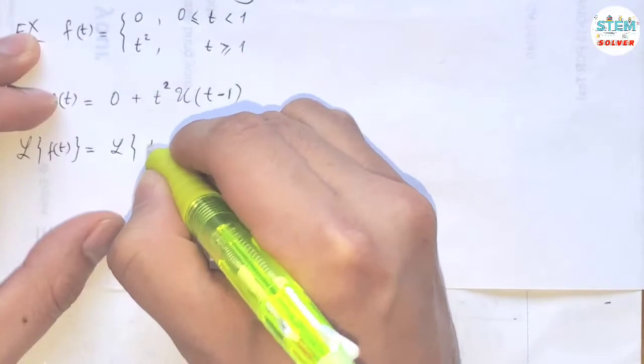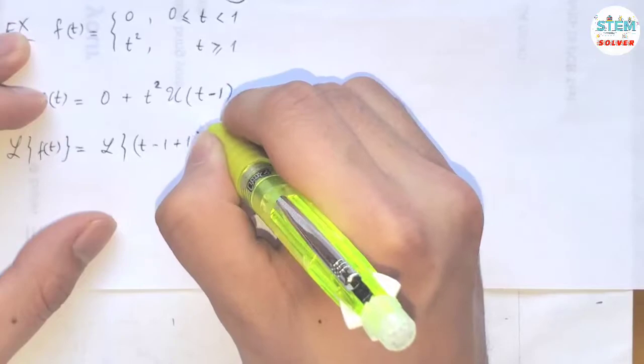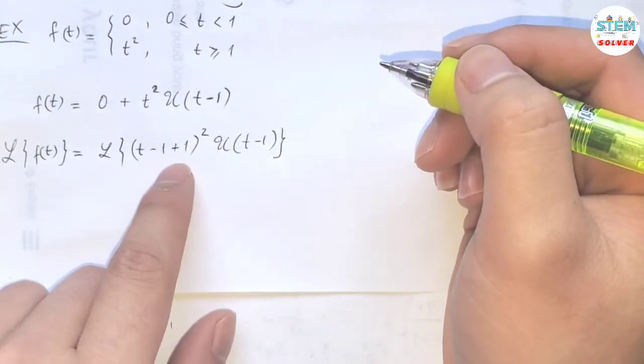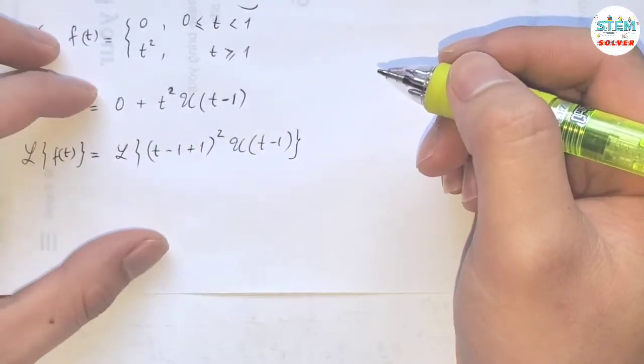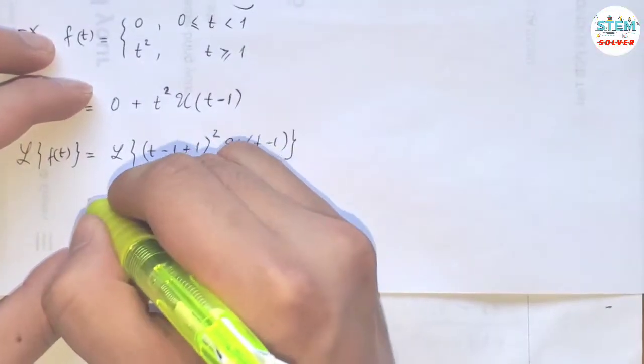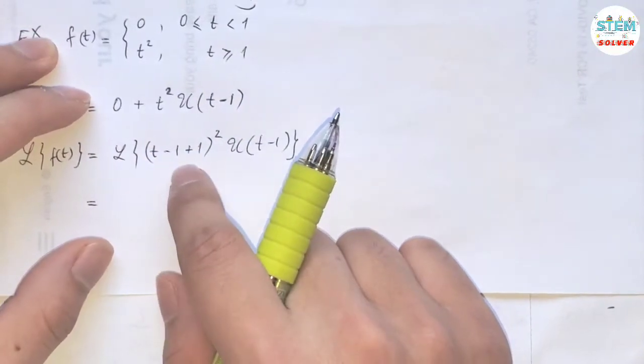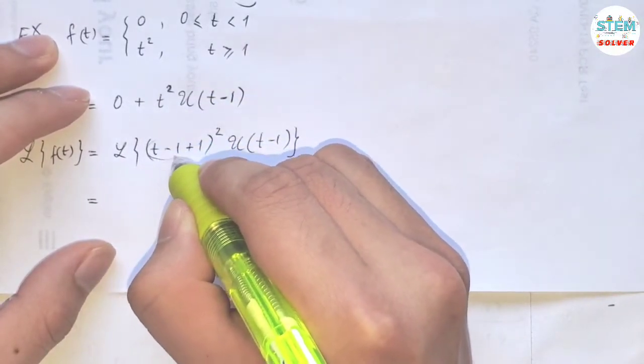So I just put in t minus one, and then I have to fix it by adding one. So (t-1) plus one squared. Negative one plus one is just zero, so literally I just add nothing. Right, and then I'm going to use not the quadratic formula but the perfect square to expand this out, and I want to keep this as a group.